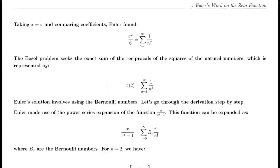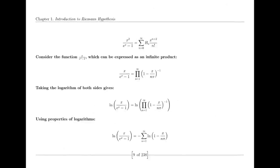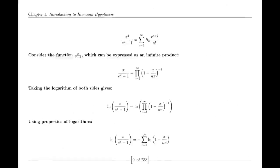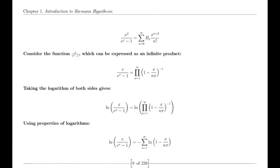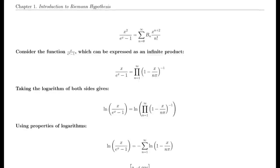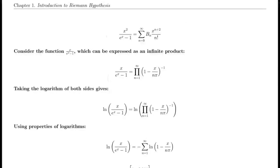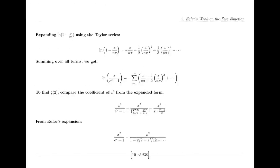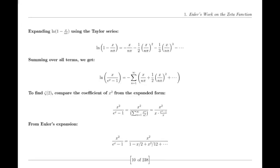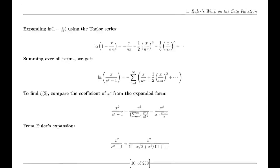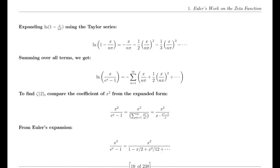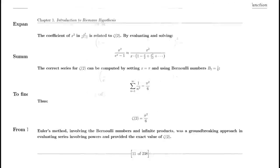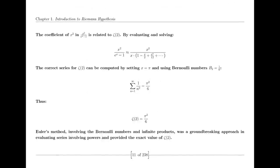Riemann's Seminal Paper. In 1859, Riemann published his seminal paper on the distribution of prime numbers, which introduced the zeta function and laid the groundwork for modern analytic number theory. This paper was a milestone in mathematical history and has had a lasting impact on the field, influencing subsequent research and discoveries.